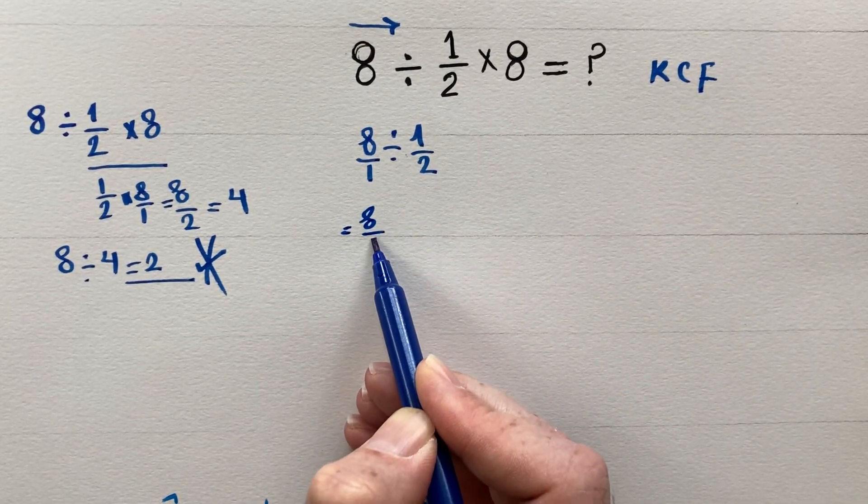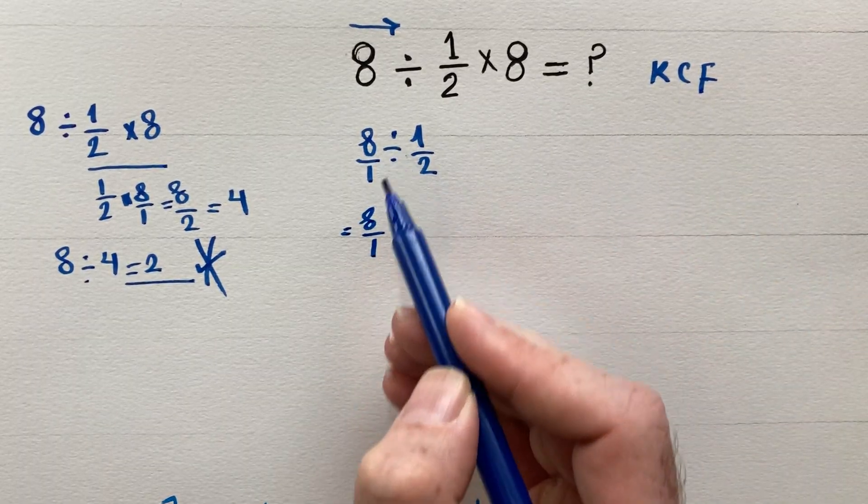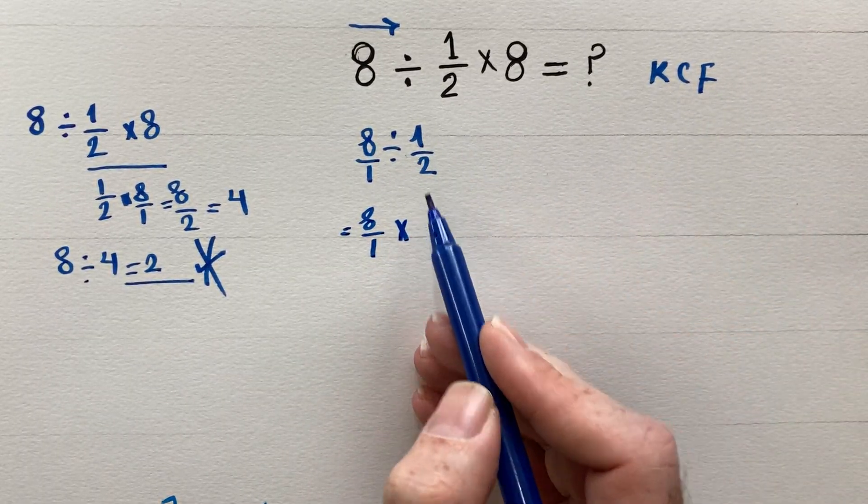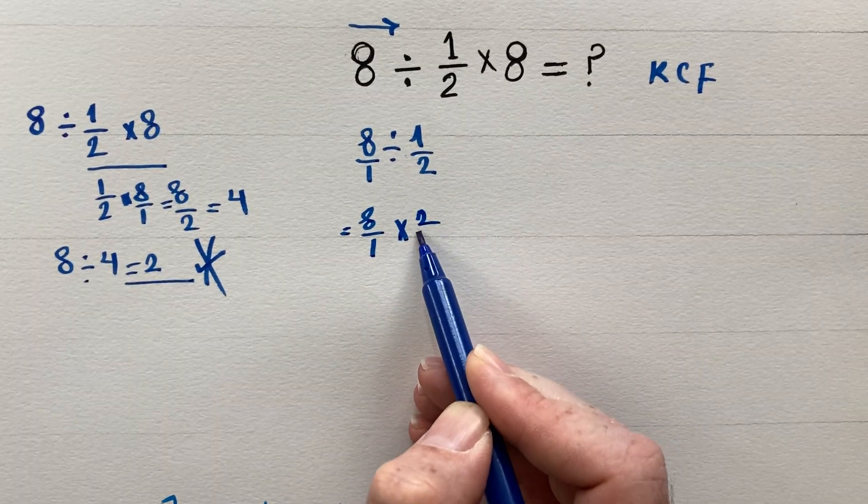the first fraction 8/1, change division to multiplication, and lastly flip 1/2 to become 2/1.